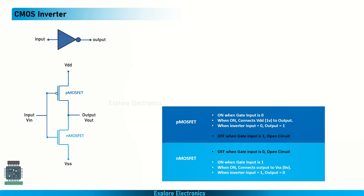Similarly, when the input is one, P-MOSFET will be off and N-MOSFET will be on. From VDD, there is no direct connection through the P transistor — there is an open circuit. For the output terminal, we have a path connected to ground, which has zero volts. So the output terminal gets logic zero. This is how P-MOSFET and N-MOSFET alternatively turn on and generate the complementary output when we apply one and zero.